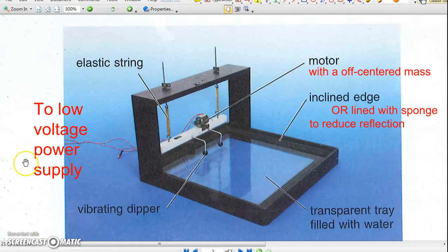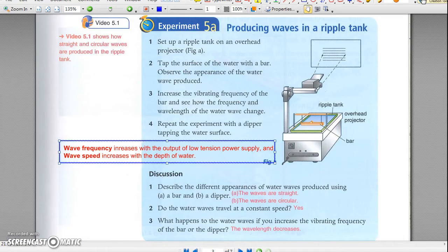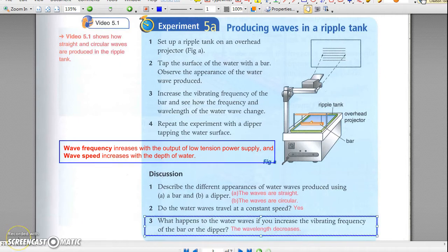The wave frequency is controlled by the output of the power supply, while the speed of water waves depends on the depth of water. When the output voltage of power supply is increased, the motor turns faster and the vibrating frequency increases. As the depth of water keeps unchanged, the wave speed does not change. Therefore, when frequency increases, the wavelength decreases.